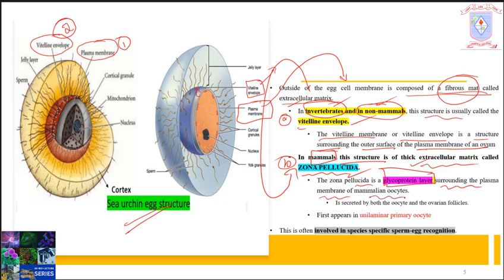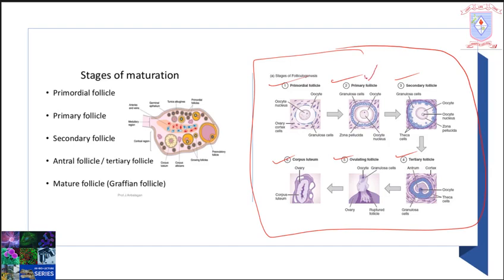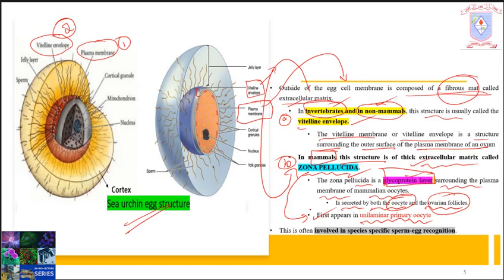The glycoproteins of the zona pellucida are secreted by both the oocyte and the ovarian follicle. This glycoprotein layer first appears in the unilaminar primary oocyte. In the primordial follicle stage, you cannot see the zona pellucida layer. But in the case of the primary follicle, you can see the zona pellucida for the very first time.